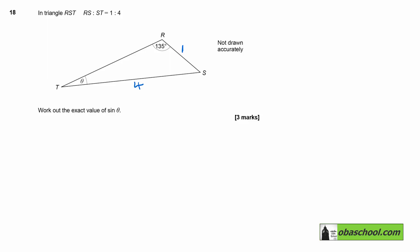We can use the sine rule here. Let's call this angle A and this side a, and this angle B and this side b. Then we would get sine A over a equals sine B over b.